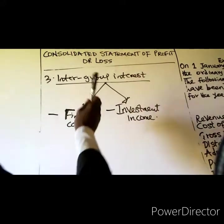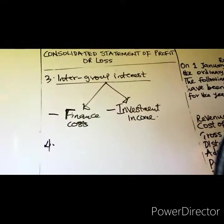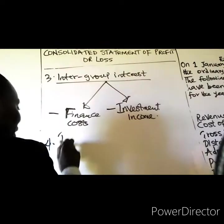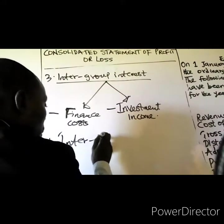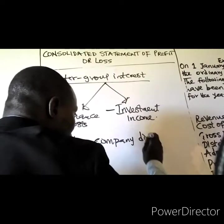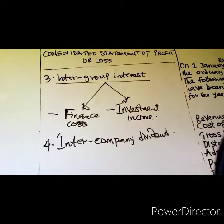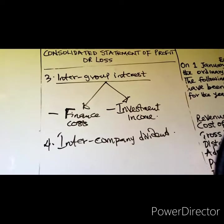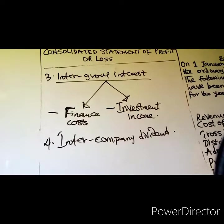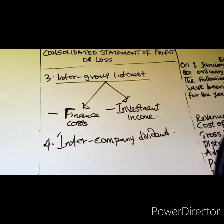Number four: the treatment of intercompany dividends. Intercompany dividends must also be eliminated — deducted from the consolidated investment income.